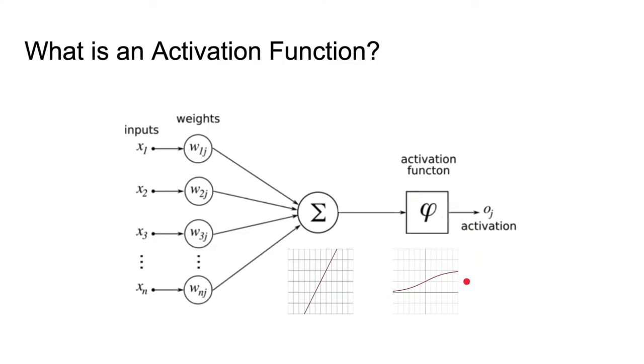This one, for example, is the sigmoid or logistic function, which we'll be using in this video, very commonly used for probability outputs, because every output that comes out of this is going to be in the range from 0 to 1.